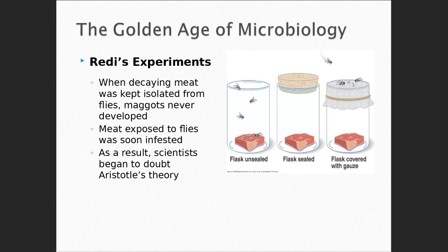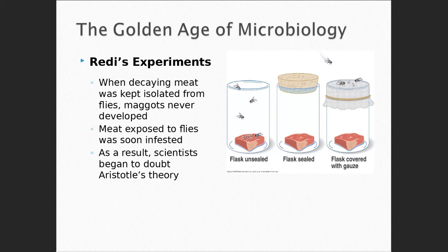We're going to talk about how microbiology became a science, and how now it is one of the umbrella disciplines within science. Microbiology is a really important umbrella, and I hope by the end of class today you will have figured out why most of the allied health programs want you to take this course. So what is the history of the science?